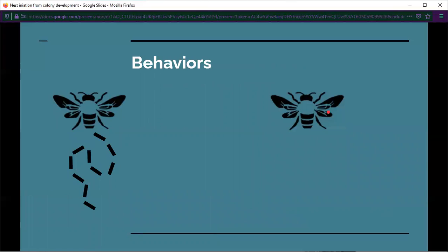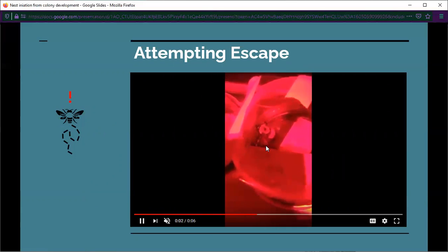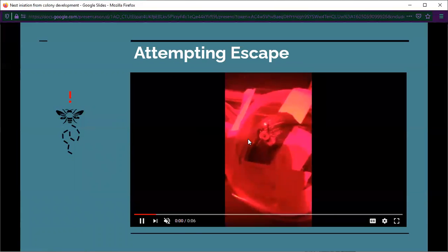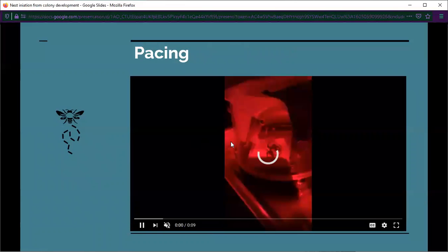While we were observing these queens and working with them, we noticed that there were certain behaviors that some queens showed and some queens didn't. Some queens, when we fed them, became very disturbed and would try to escape from their colony boxes, and other queens didn't. We developed four main behaviors that we observed. The first is attempting escape, and this is a nevadensis queen. You can see she's up against the glass, she's beating her wings, trying to escape from her habitat.